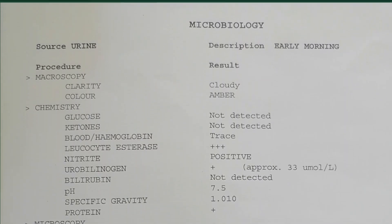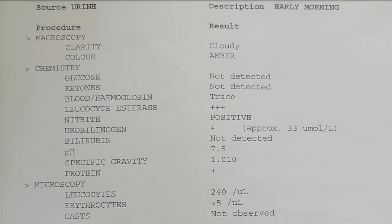This was the report of his urine analysis. Notice that the report is divided into three components: macroscopy, defined by the blue circle; chemistry or dipstick analysis, defined by the yellow circle; and microscopy, shown by the pink circle.